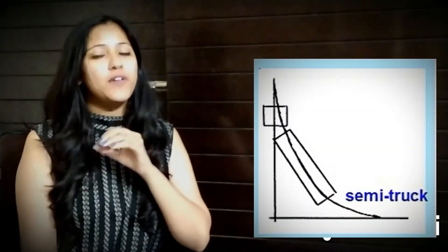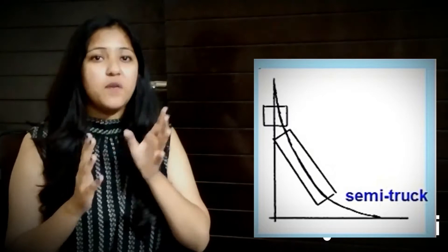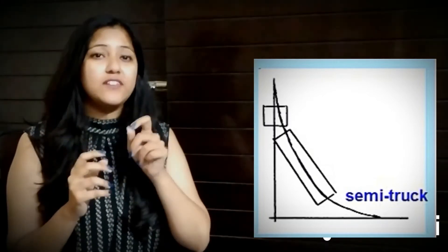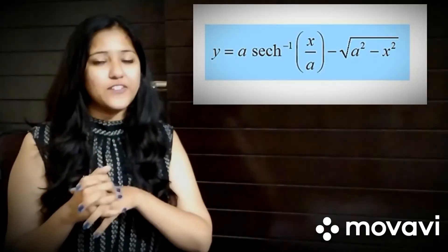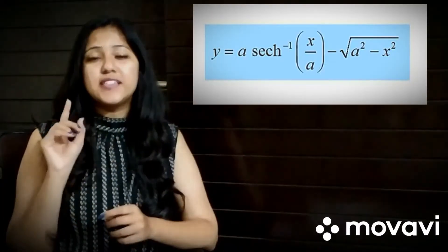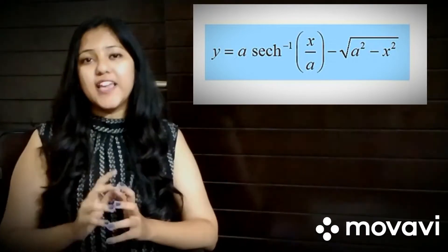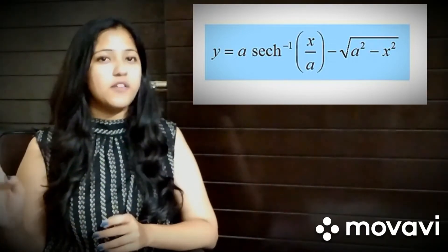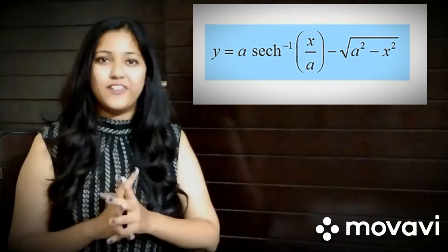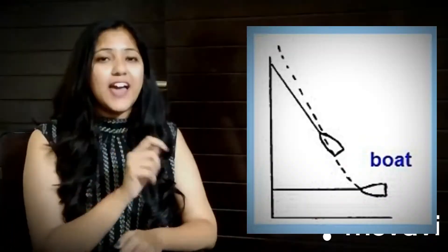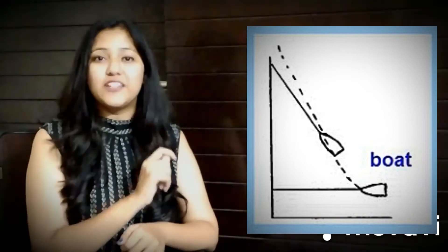The second application is tractrix. The word tractrix is derived from 'tractor'. When a long tractor has to take a sharp turn from a corner, it forms a particular curve called tractrix. The equation of tractrix is given by y = a sech⁻¹(x/a) - √(a² - x²), where a is again an arbitrary constant. A similar curve is formed when a boat attached to a rope is pulled by a man at the shore.